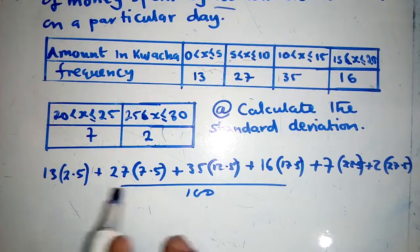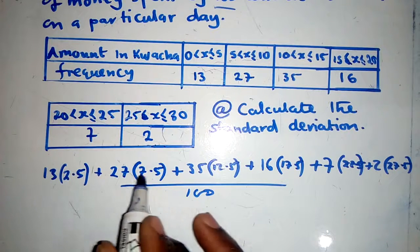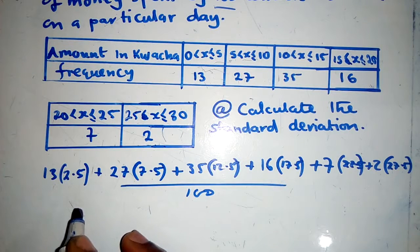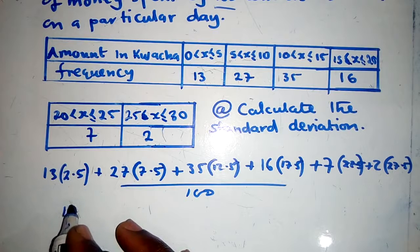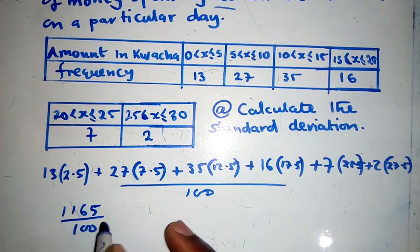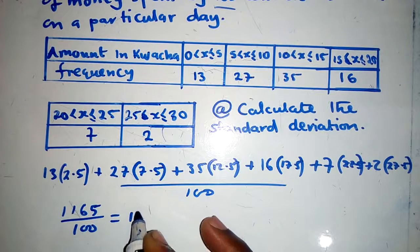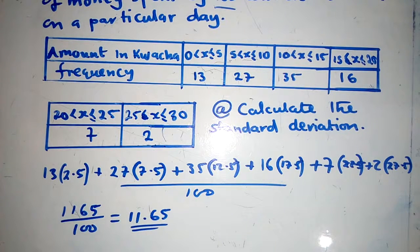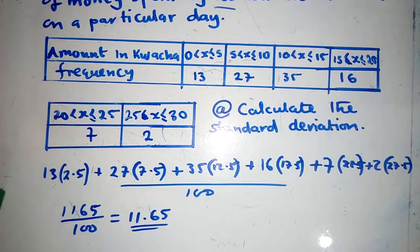Now we multiply frequency by midpoint for each row and sum them all up. You can punch these into the calculator and your total will be 1165. Divide that by 100 and you get 11.65 — this is your mean. That's the simplest way to find the mean.